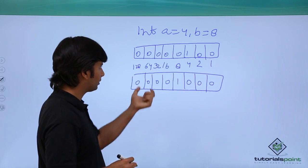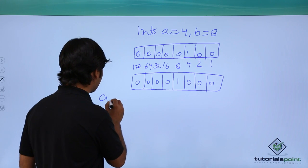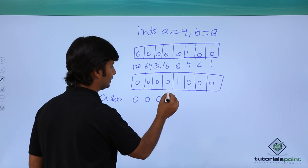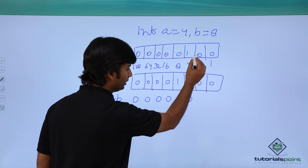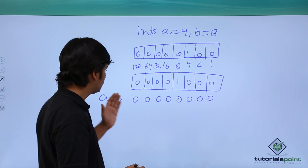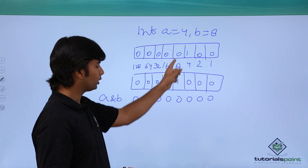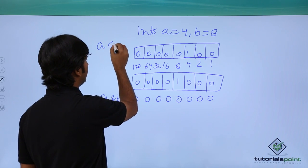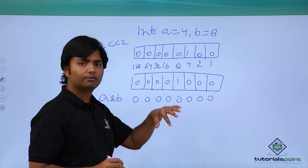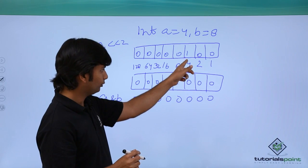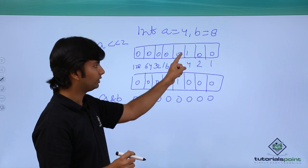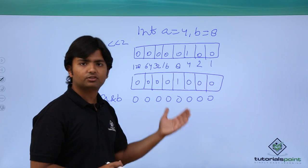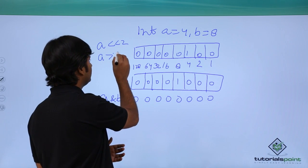When you perform any operation between a and b, it is calculated bit by bit. For a AND b: 0 AND 0 is 0, 1 AND 0 is 0, and so on — all bits produce zero. For OR operation, you get a one in the positions for both four and eight. For left shift by two bits, the bit for four shifts two places left — one, two — landing on position 16. So a left shift 2 gives 16.